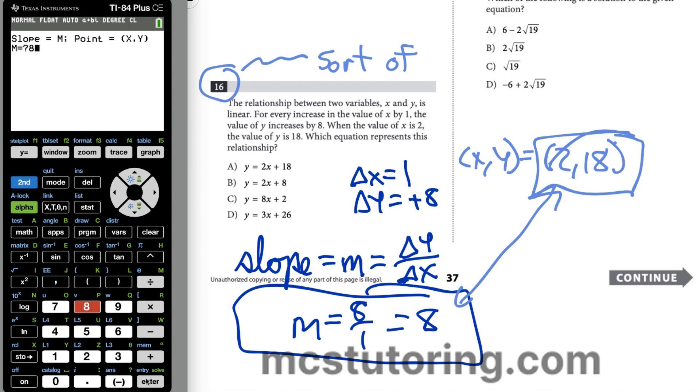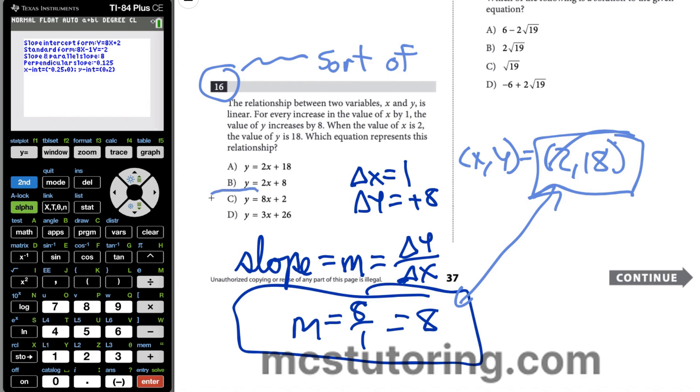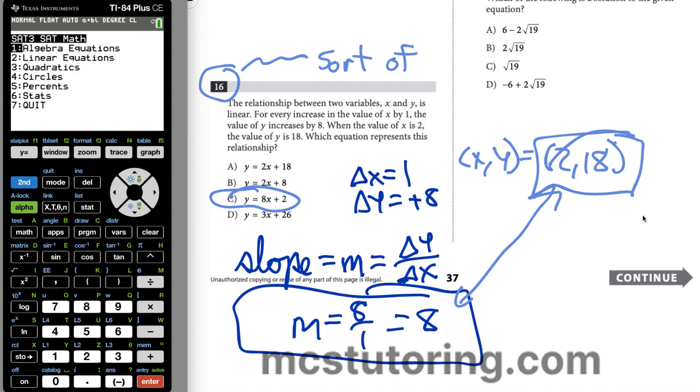We have a slope and a point. I'm going to go to linear equations and go to point slope. What is the M value? M value is 8. What is the X value? That's 2. My X1 and my Y1 is 18. It gives us everything we could possibly want. We have Y equals 8X plus 2. I'm going to go with option C because that's a good match there. That one's solved.